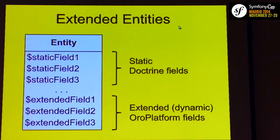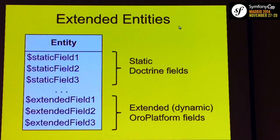Almost every business requires customization of existing entities. A very simple case: you have a user entity, but depending on the business, this entity should have different fields. For example, one business will require three phones, two emails, and five addresses. Another business will require lots of API credentials — it has APIs with first, second, and third systems, each with credentials, maybe files, maybe RSA keys. That's how extended entities can help you. Extended entities are a special intermediate layer between the Doctrine entities and the database itself.